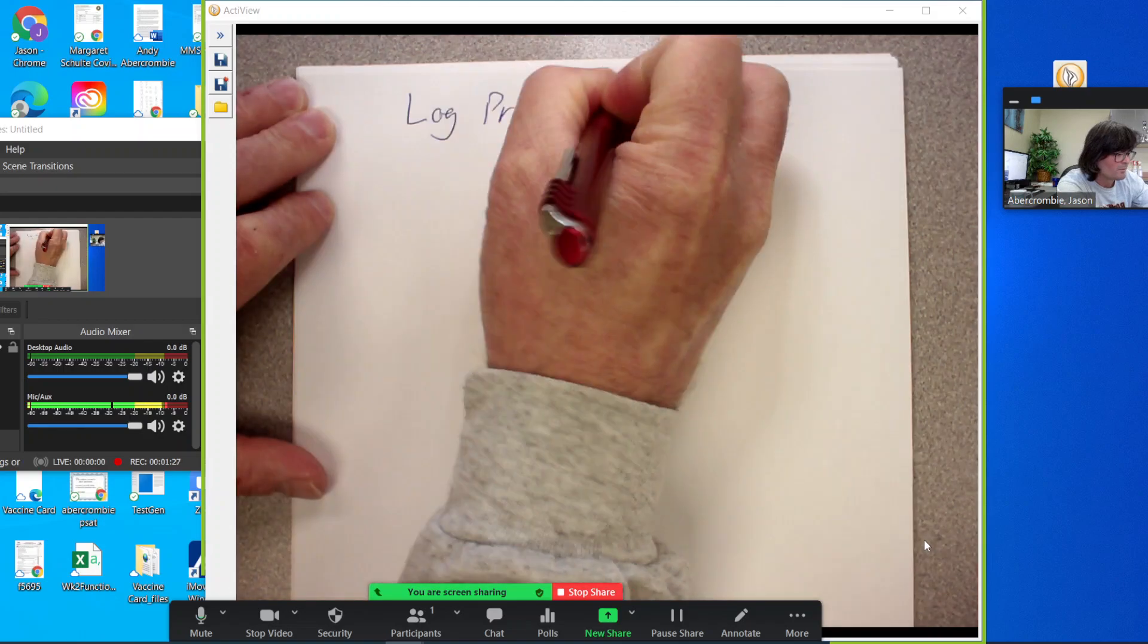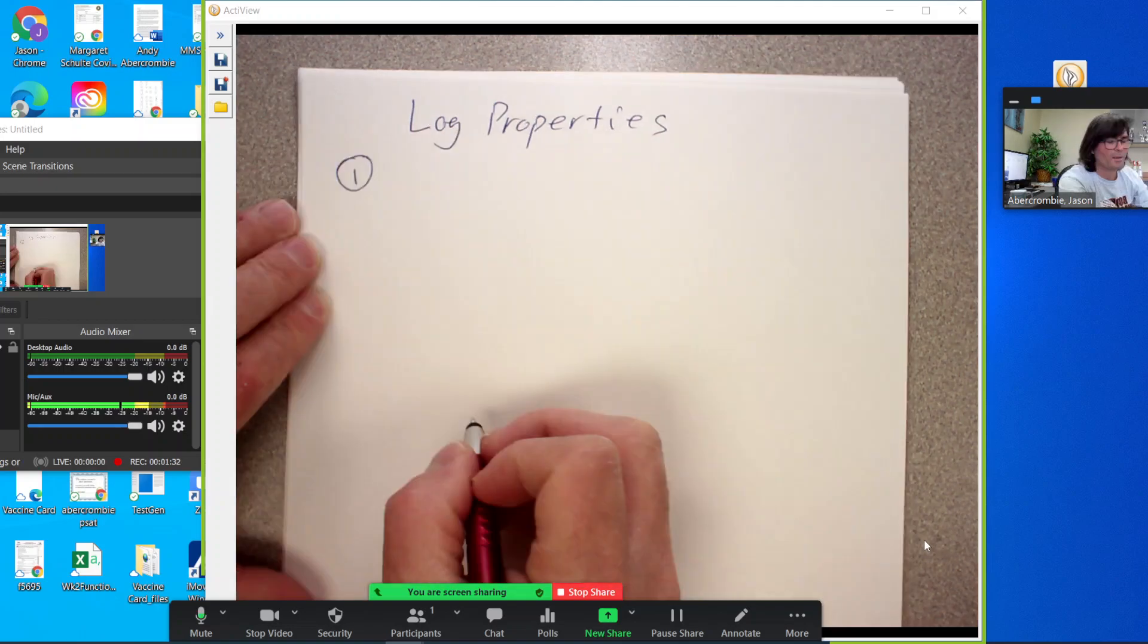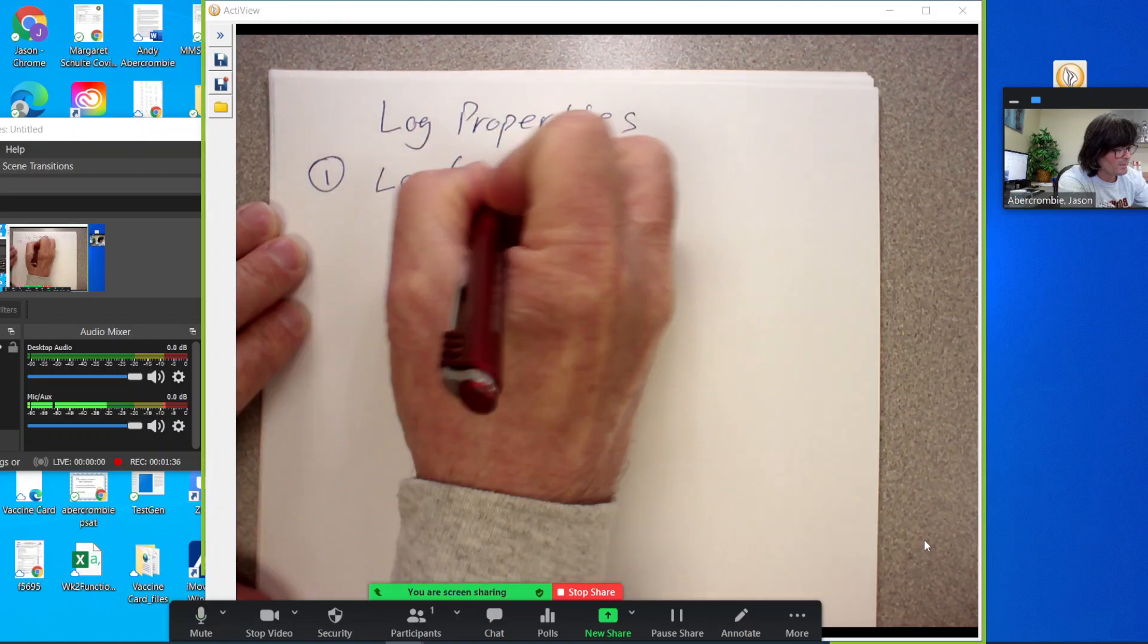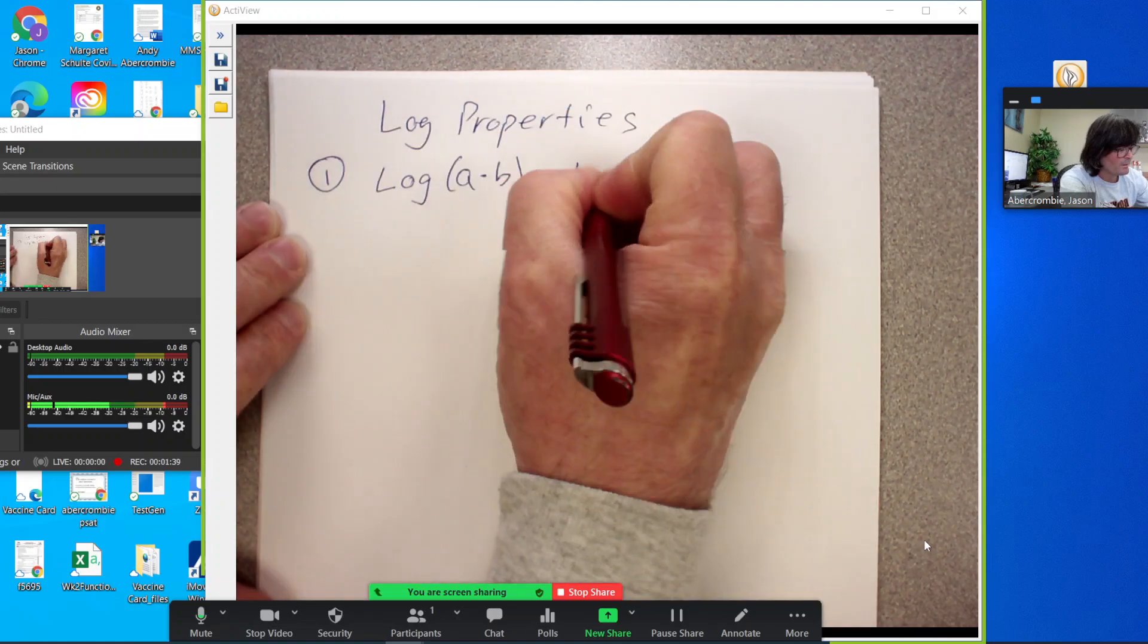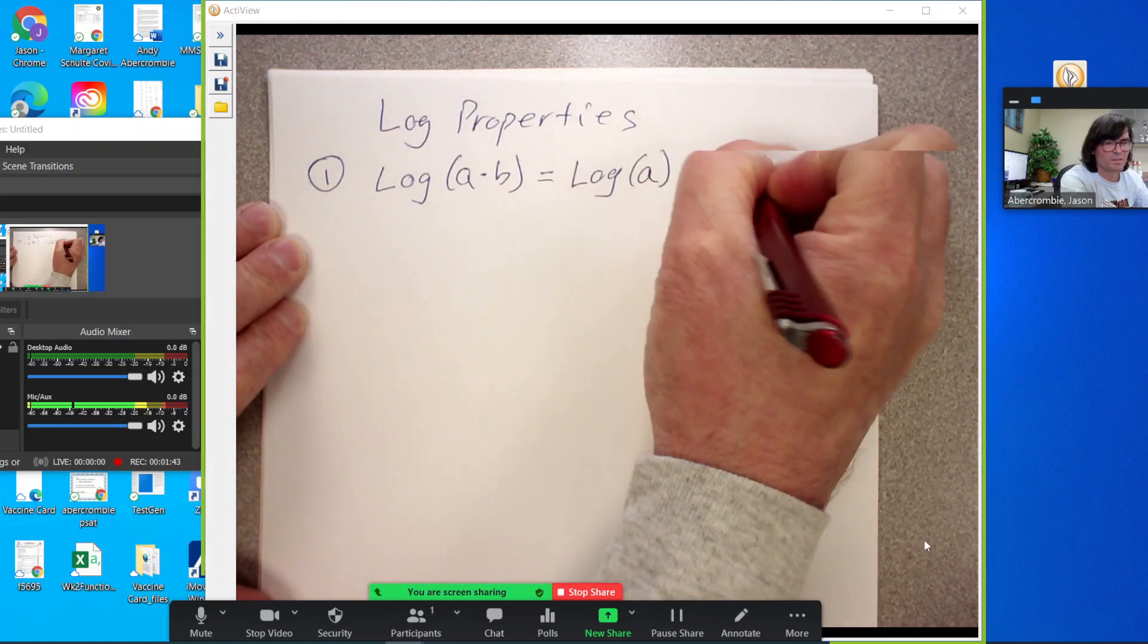So log properties. There's three of them. The first one tells me that you can do the log of a times b. And that is the same as the log of a plus the log of b.